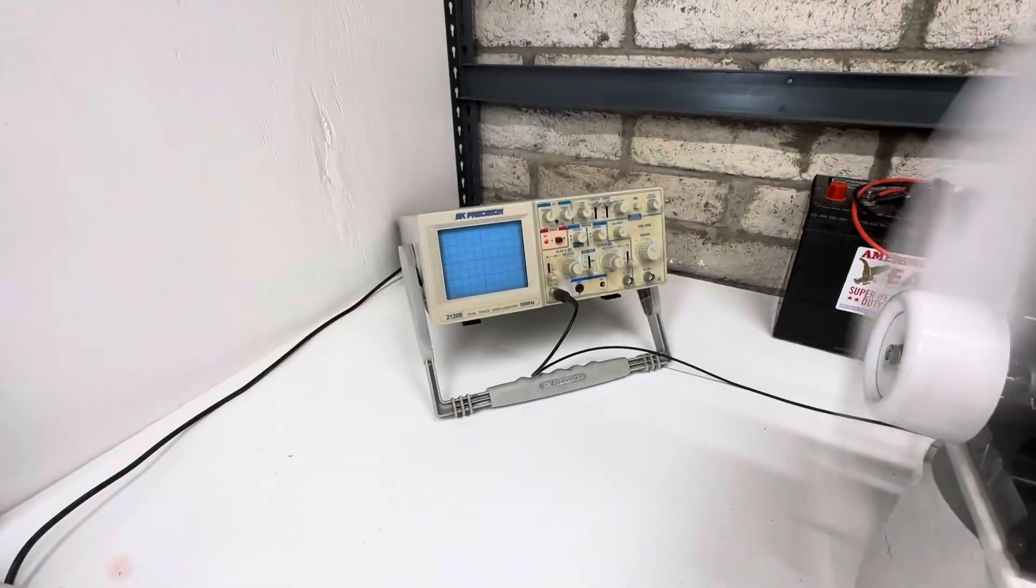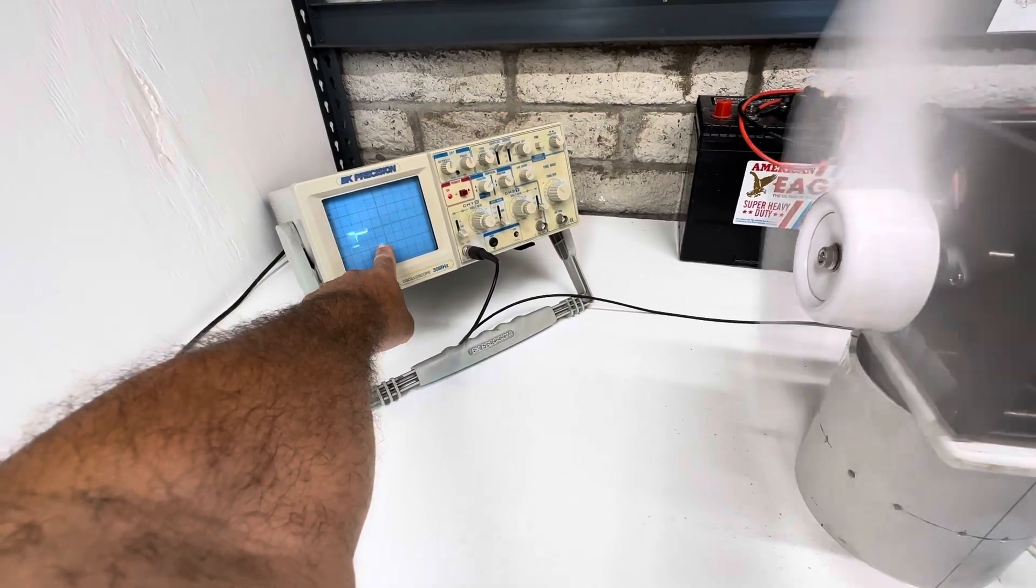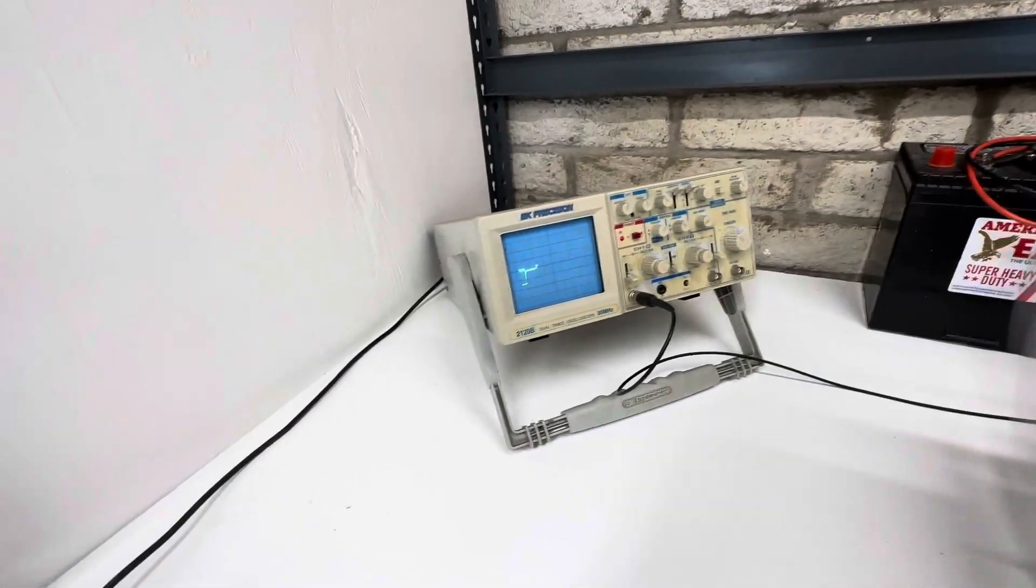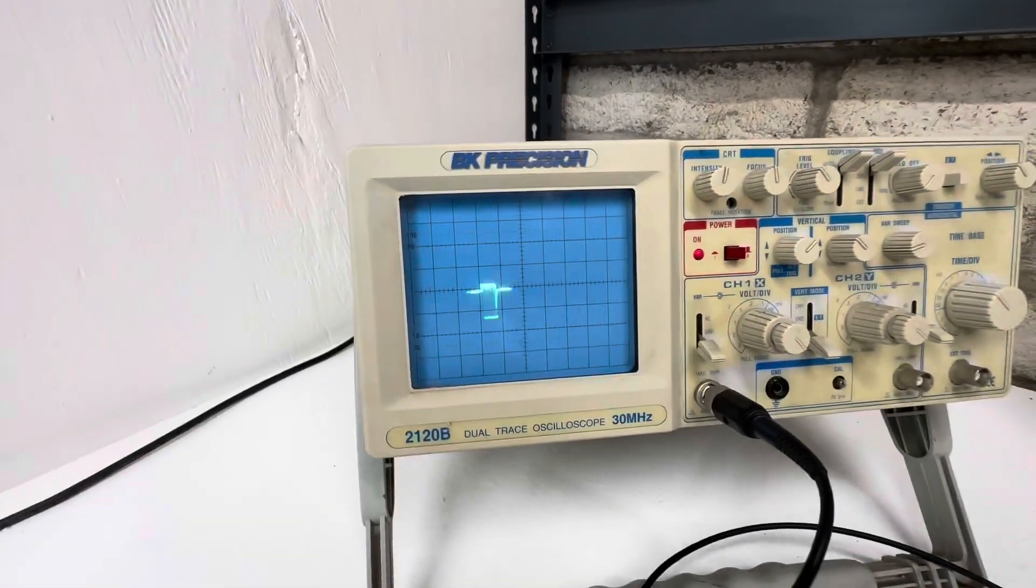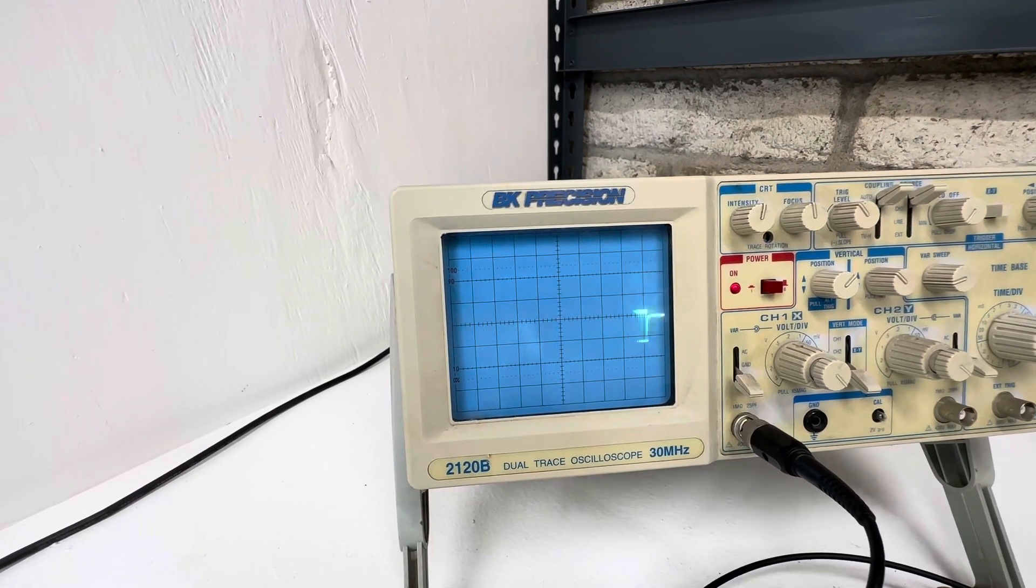Right here on the scope, this is the 12 volts, and then this is the back EMF charging up the capacitor. So each square is 50 volts. You can see you're just over the first square, and the top is 12 volts, so it's just barely up there.